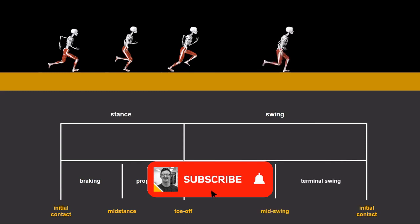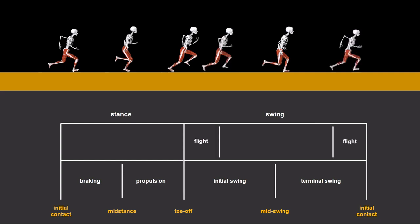Mid swing separates the swing phase into initial and terminal swing. Finally, there are two flight phases when neither foot is in contact with the ground.